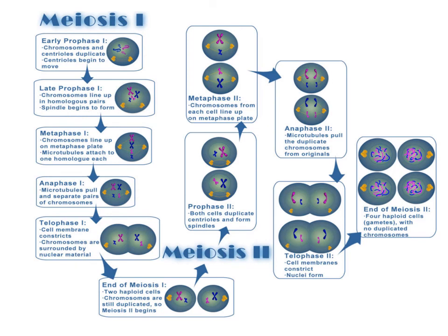A chart illustrates the movement through cell division stages. Meiosis 1 proceeds through early prophase 1, late prophase 1, metaphase 1, anaphase 1, and telophase 1, moving into meiosis 2, which includes prophase 2, metaphase 2, anaphase 2, and telophase 2. The different stages of chromosomal separation and union at each stage are defined in a clear manner, showing how the cell divides by meiosis.